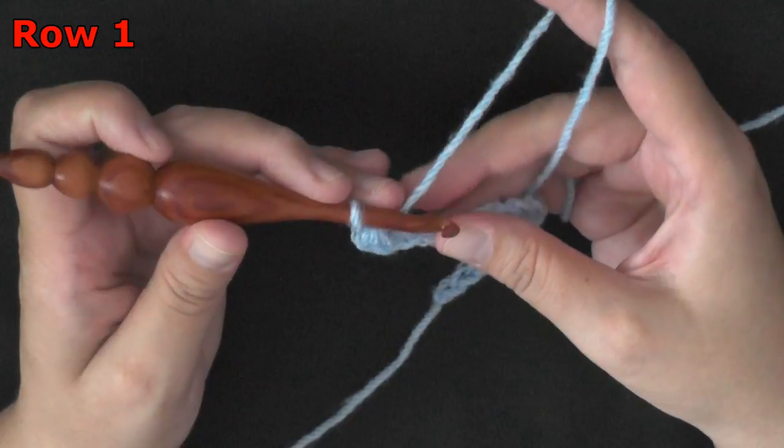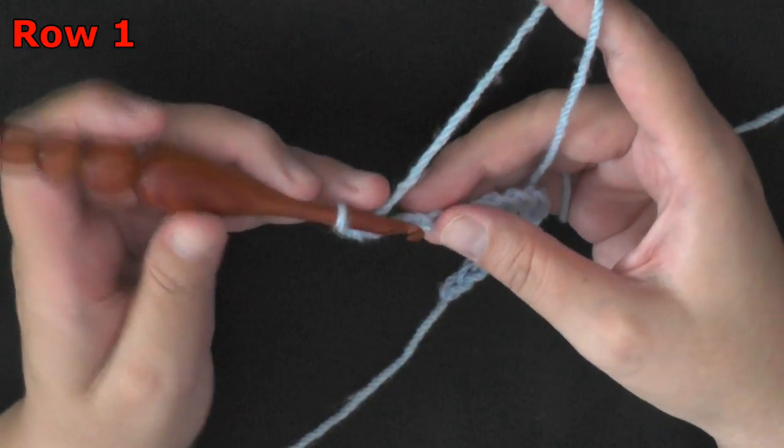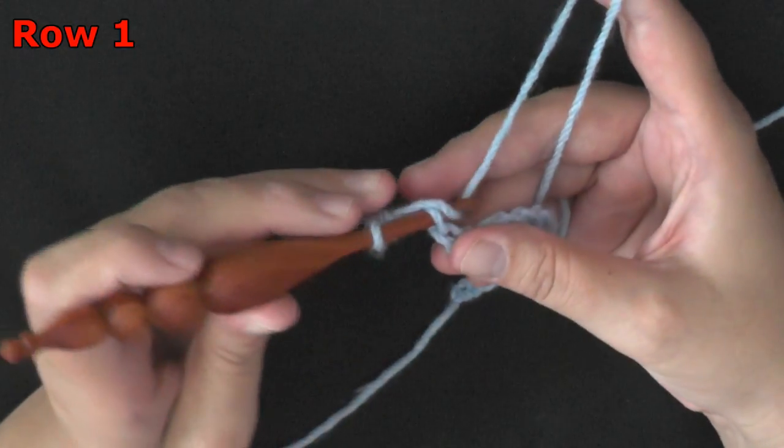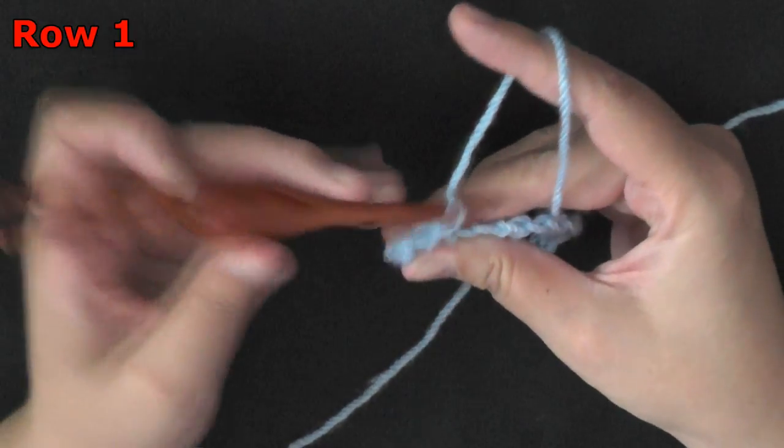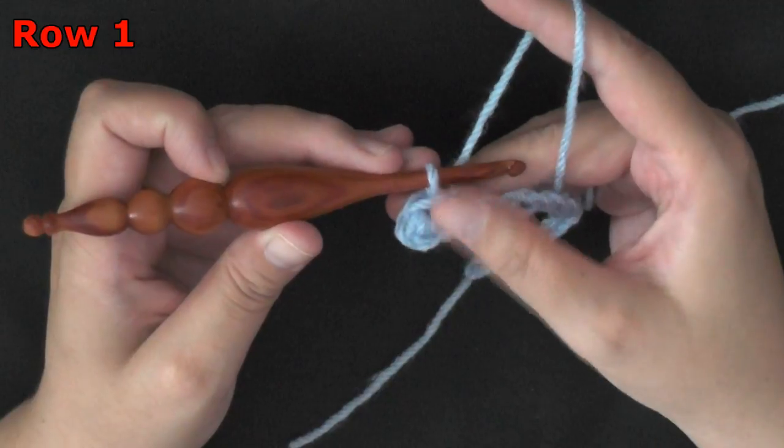The very next stitch, you'll want to do a slip stitch. So you insert your hook, pull the loop completely through your stitch and your loop that you had on your hook.